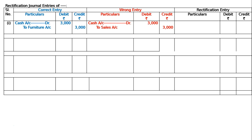The sales credit will be cancelled by debiting sales account in the rectification entry, and furniture account is to be brought down. So the rectifying entry is: sales account debited three thousand, to furniture account three thousand — being sales credit cancelled and furniture account debited to rectify the error.